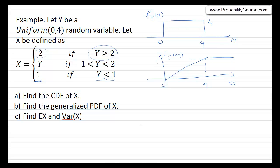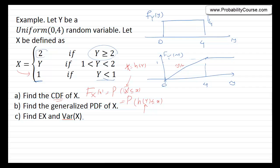My suggestion is that you solve this problem before watching the rest of the video. Let's look at the solution. X is a function of Y, and we start with the CDF. The CDF of X is the probability that X is less than or equal to x, and we plug in x equals h of Y, so it's the probability that h(Y) is less than or equal to x. The CDF of Y is y/4 for values of y between 0 and 4, equals 1 for y larger than 4, and 0 otherwise.